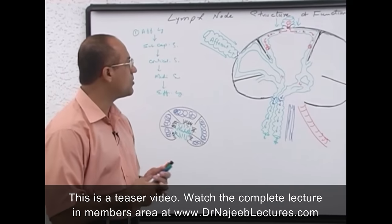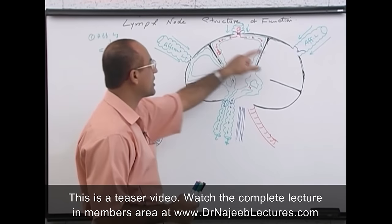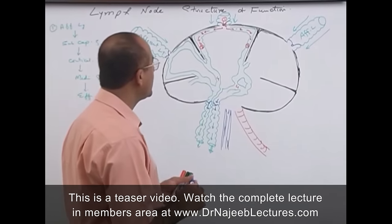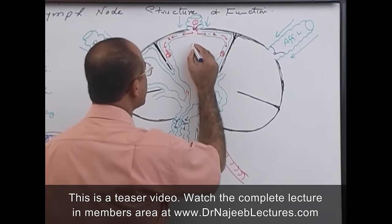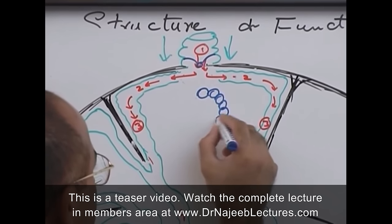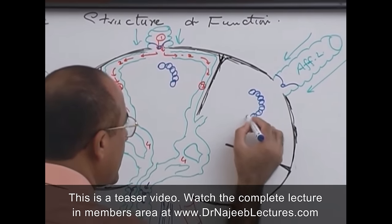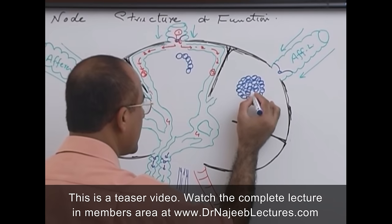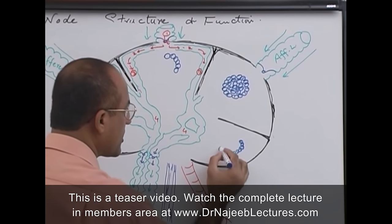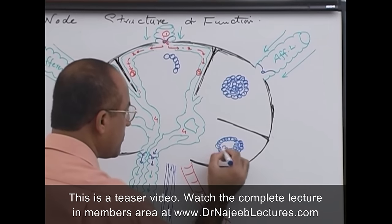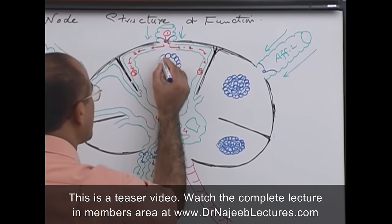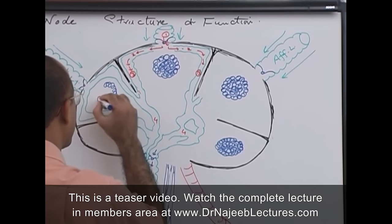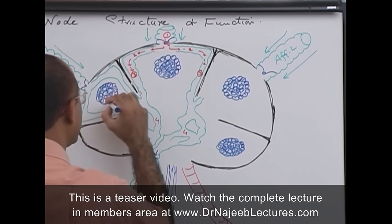Now, the cells in the outer cortex are B lymphocytes. These B lymphocytes are arranged in aggregates that look like nodules. These aggregates are called lymphatic nodules or lymphatic follicles — they are B cell aggregates in the outer cortex.